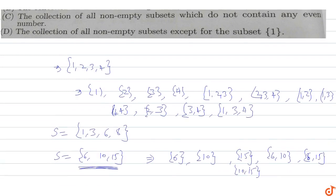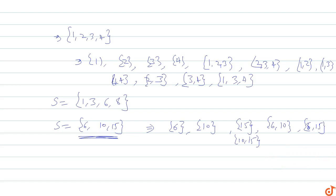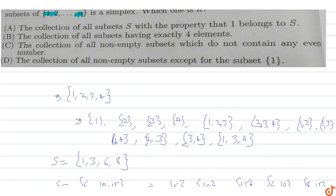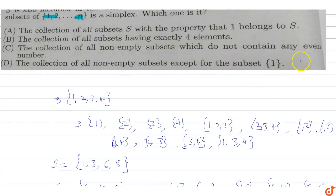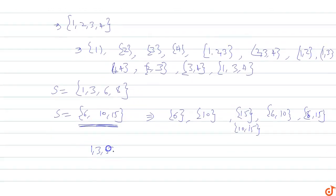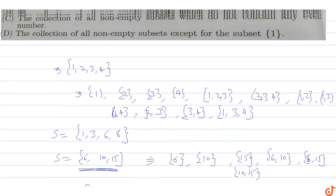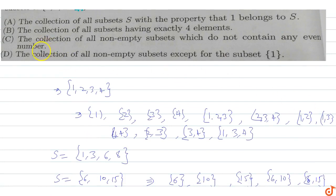Option B — the collection of all subsets having exactly four elements — is incorrect. A simplex set can have n elements; it is not compulsory that it has only exactly four elements. Option C is the collection of all non-empty subsets which do not contain any even numbers. The non-empty sets containing only odd elements like {1, 3, 5, 7, 9} satisfy the simplex condition.